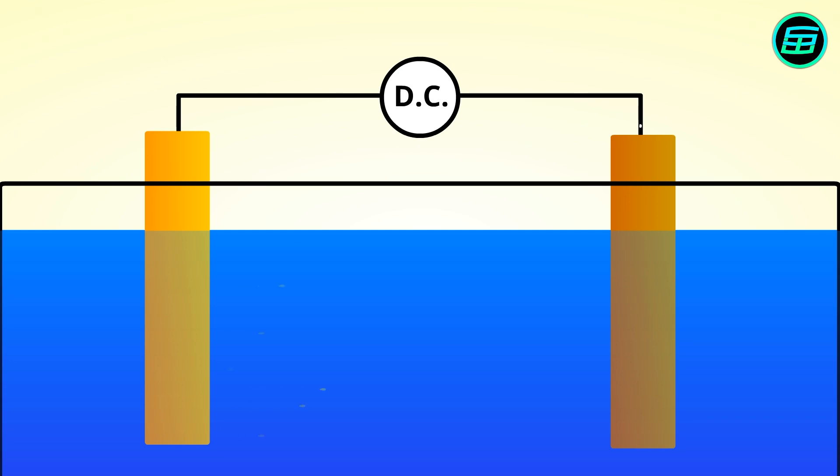Electroplating is a process in which metal atoms are transported onto the surface of another metal using electricity. As a result of this process, the metal surface is plated in a thin layer of the imported atoms.